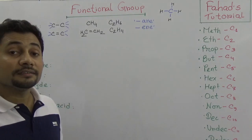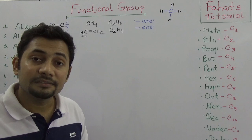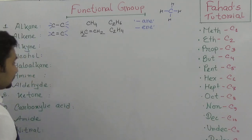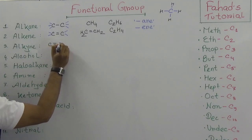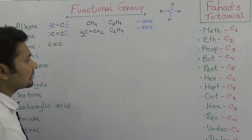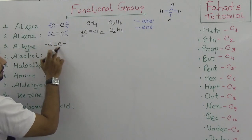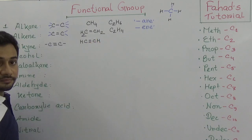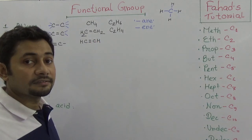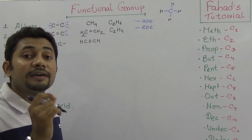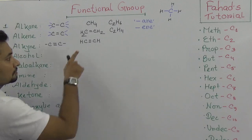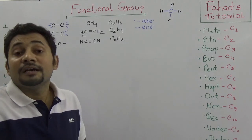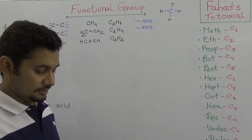After ethene, we say propene, butene, pentane, hexane, and so on. Alkyne has a carbon-carbon triple bond. With a triple bond, one single bond is left on each carbon, so we write HC≡CH — this is ethyne, and ethyne is the first member of the alkyne group. Its formula is C2H2, and the suffix we pronounce is '-yne'.